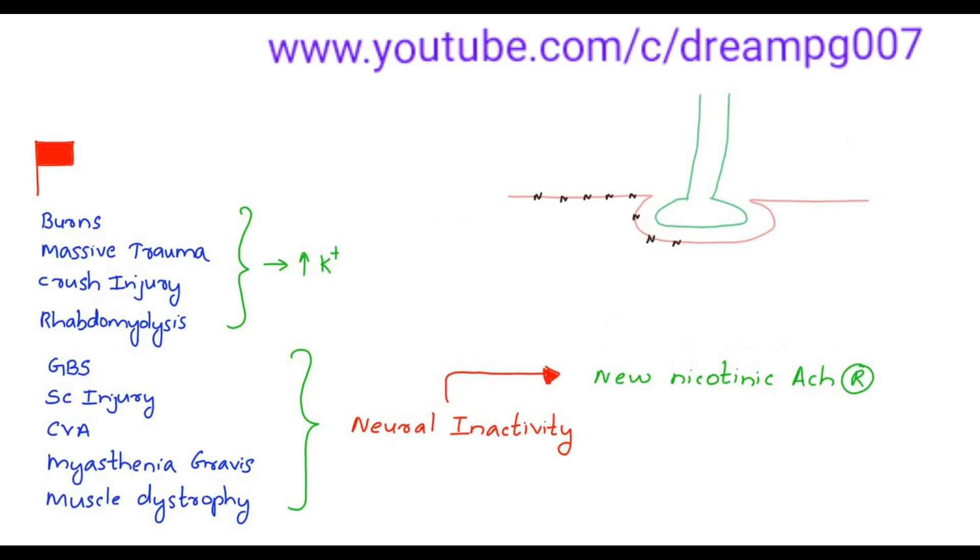The new nicotinic acetylcholine receptors which are produced as a result of neural inactivity belong to gamma subtype, whereas the normal nicotinic acetylcholine receptors belong to epsilon subtype.